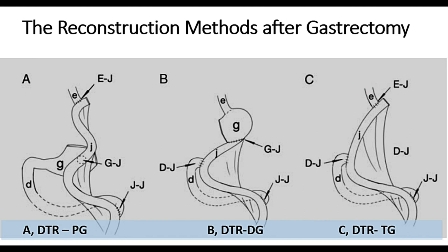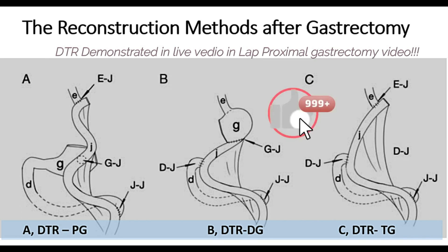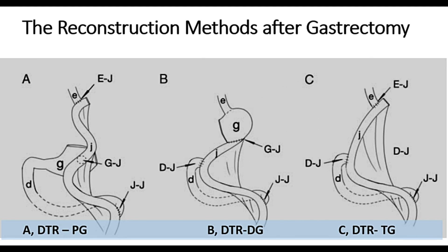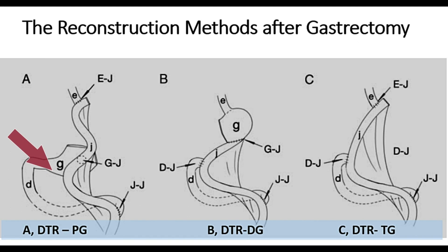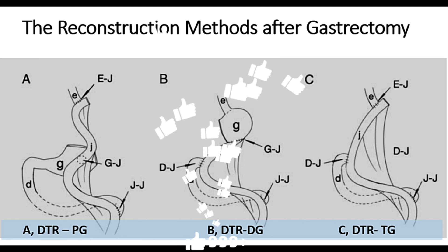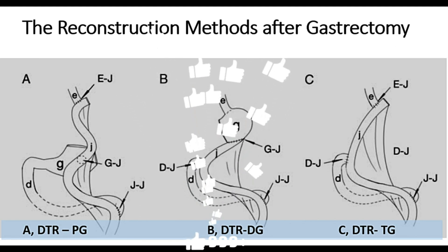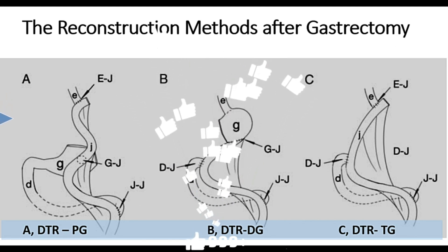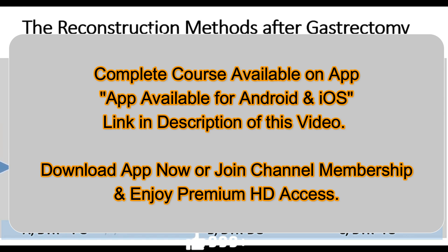Briefly, the double-track reconstruction method is preferred because it enables endoscopic access to the ampulla, which is a big advantage. In future, if there is any need for endoscopic access to the ampulla or CBD — for example, in case of CBD stone or peri-ampullary malignancy — this route is easily available. Another advantage is that in proximal gastrectomy, the remnant stomach (distal stomach) is available for food storage, and the patient can have a normal one-time meal.